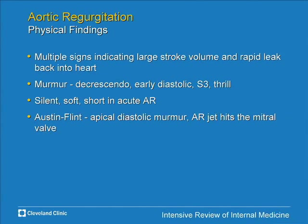The murmur you really need to know is an early diastolic decrescendo murmur, best heard at the left sternal border. In acute AR, EDP is so high there may be little pressure difference between aorta and LV — you may not hear much. In chronic AR, the longer the murmur, the more severe. The Austin Flint murmur is an apical diastolic murmur caused by the AR jet striking the mitral valve, causing partial closure — previously thought to simulate mitral stenosis.